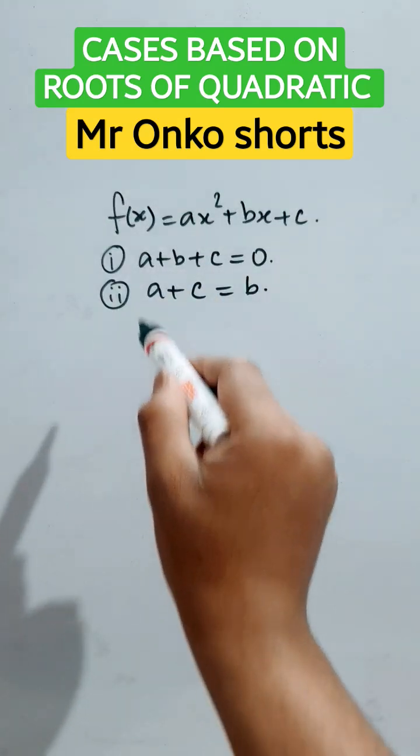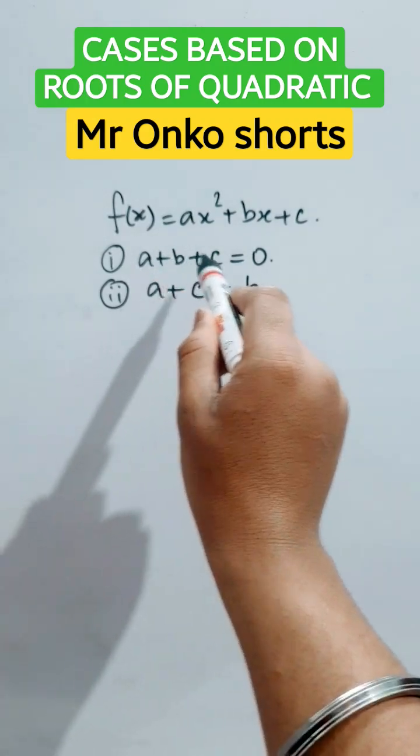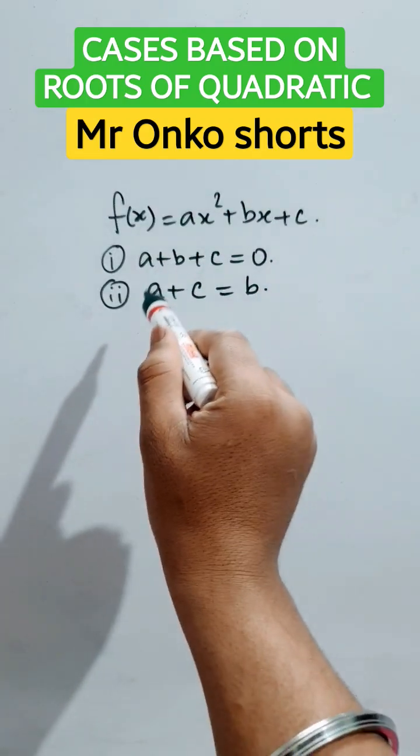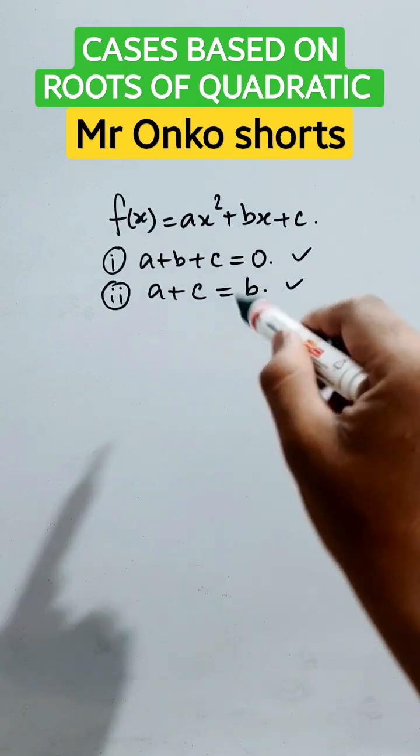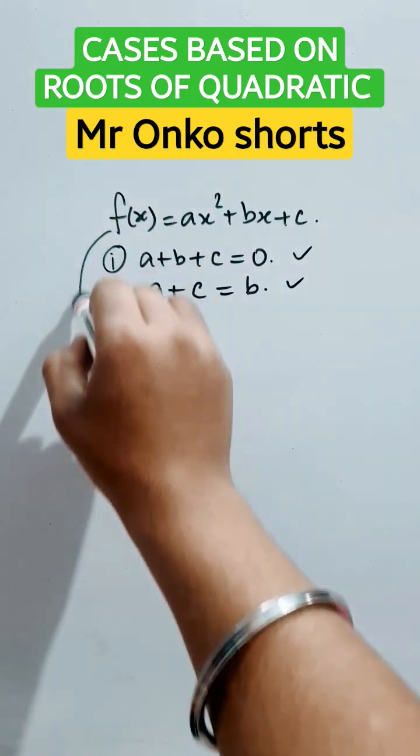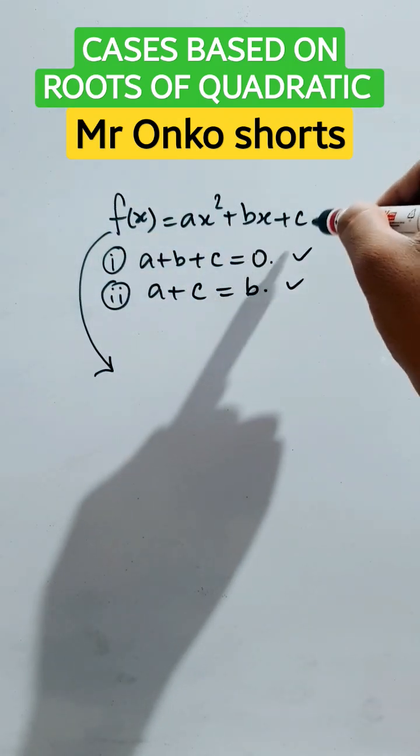And we have to study these two cases: if a plus b plus c equals to zero, and if a plus c equals to b. What happens when these two cases arise? What happens to the type of the roots of the given quadratic?